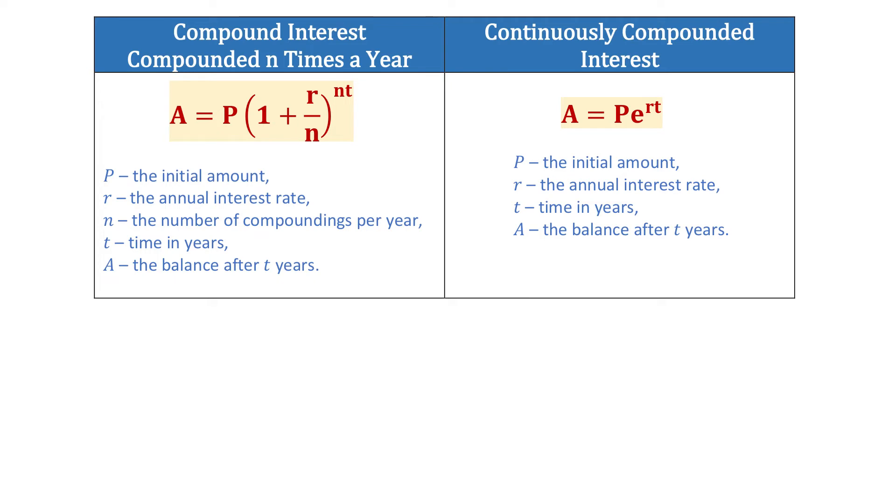To the left, we have the formula for compound interest when the interest is compounded n times a year. The formula is A equals P times 1 plus r over n to the n times t. In this formula,